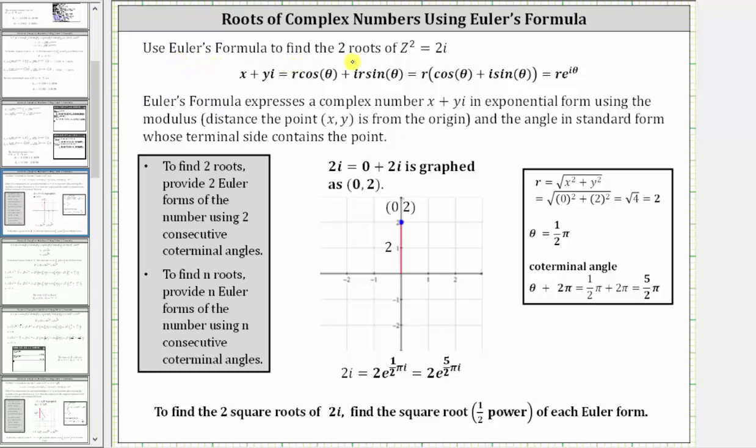We're asked to use Euler's formula to find the two roots or two complex solutions of z squared equals two i.